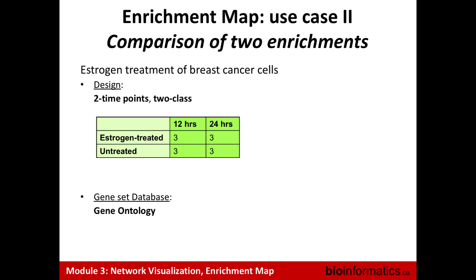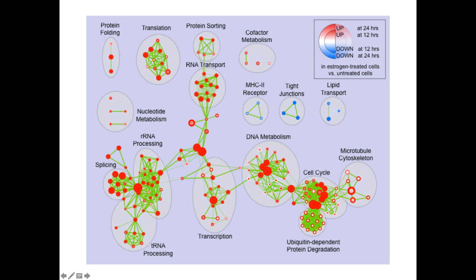Another thing we can do with this — not easy to do with standard enrichment analysis — is compare multiple conditions. Here we have two time points, 12 hours and 24 hours. We did the same type of enrichment analysis at each time point, and mapped enrichment statistics from the early time point to the center of the nodes and the late time point to the border of the nodes. You can see that many pathways are enriched in the upregulated genes at both time points, but some — like ubiquitin-dependent protein degradation — are not enriched at the early time point but very enriched at the late time point. Now in Enrichment Map you can do more than two conditions.